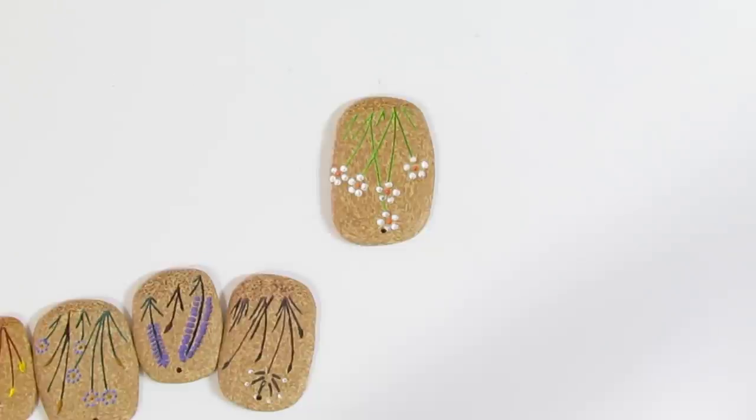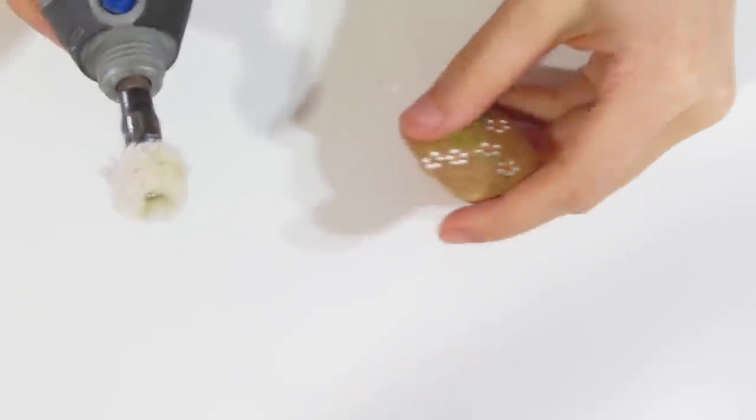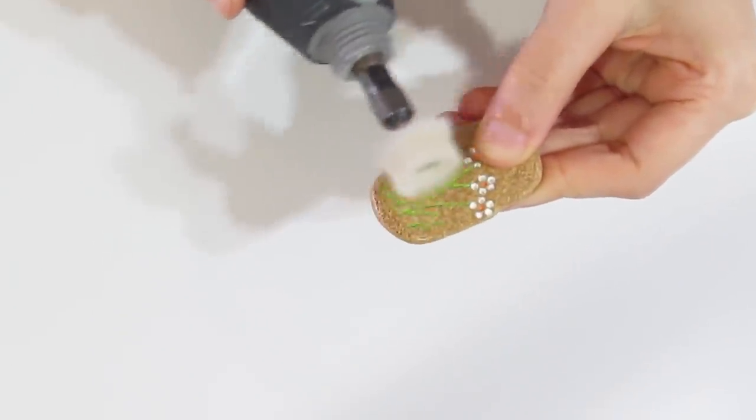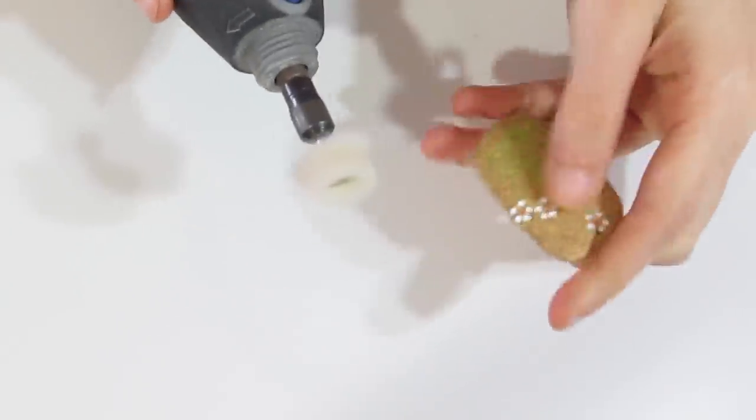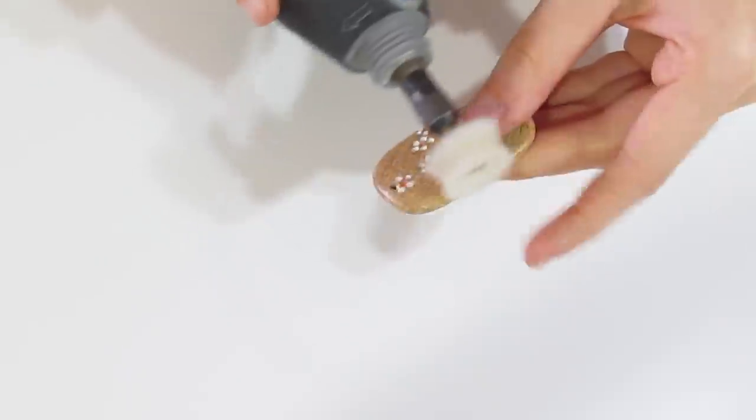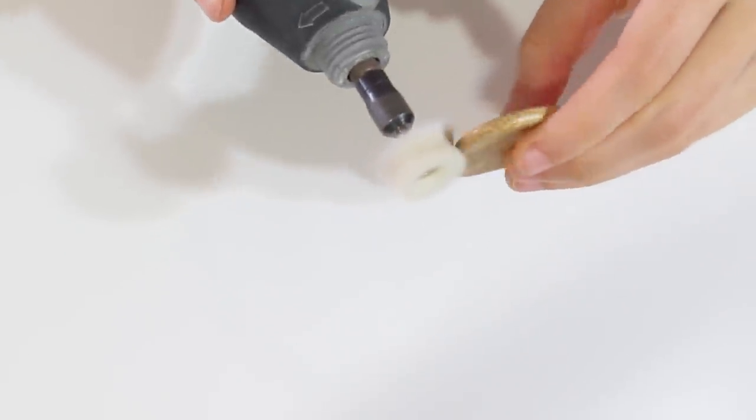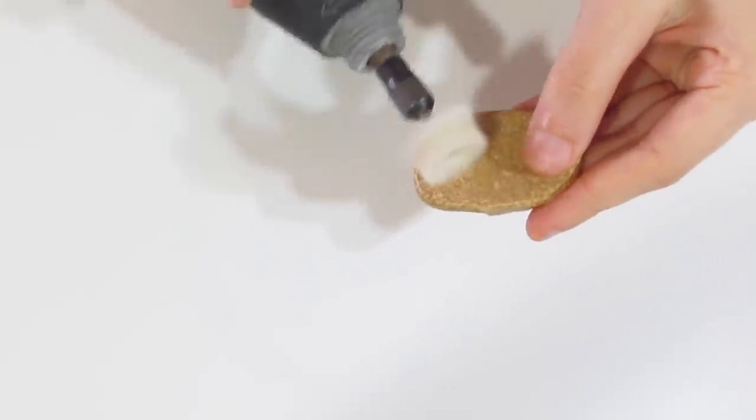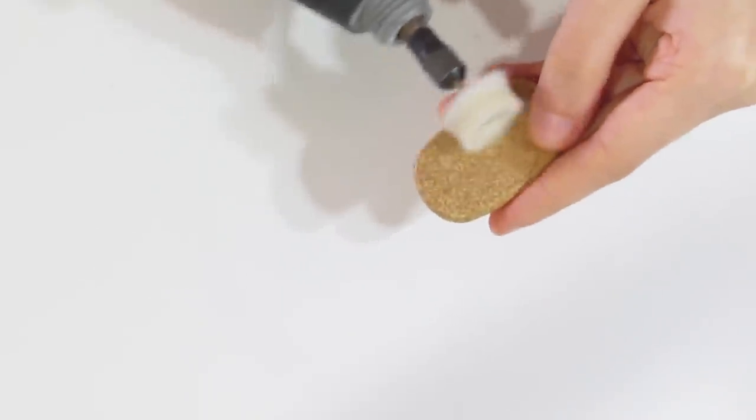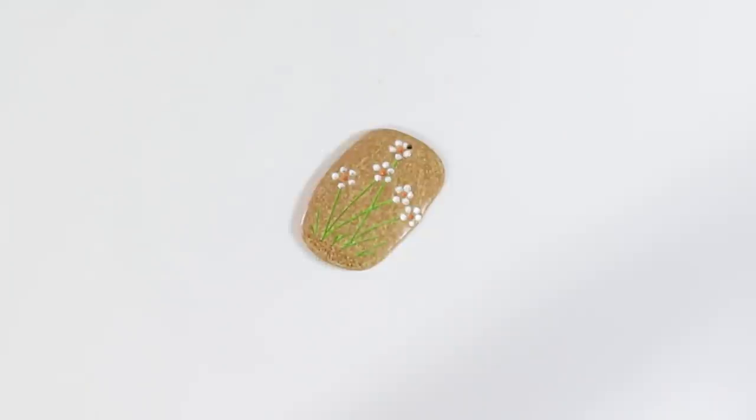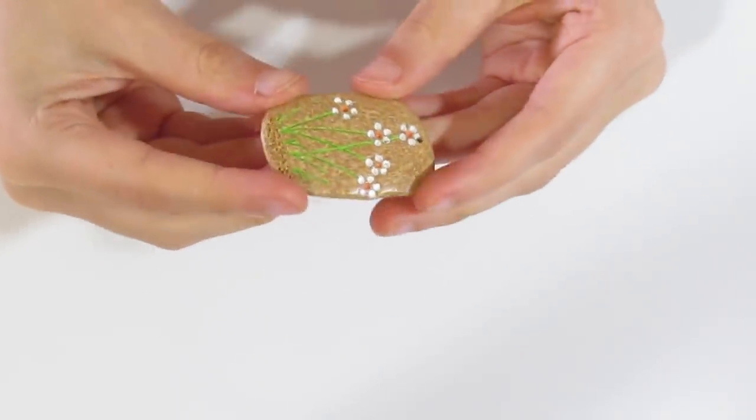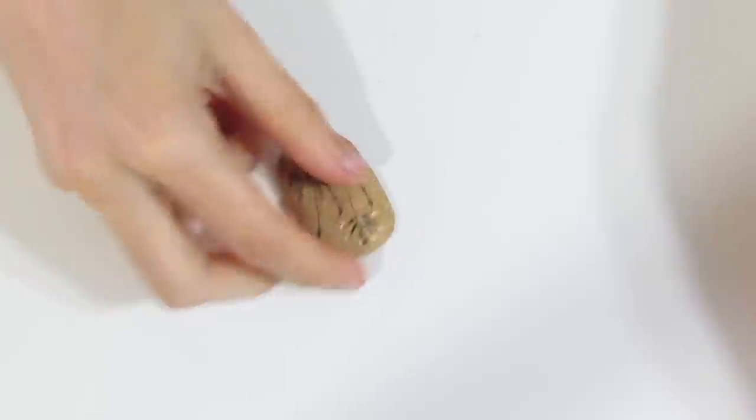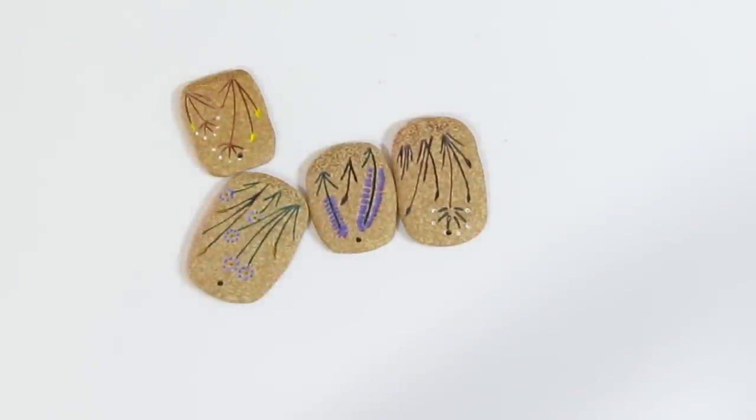And you can either buff that by hand or you can use a buffing wheel. There we go. That has now a nice light sheen. And I actually really like that. So I think I'm going to repeat that with these other pieces. I'm just going to give them a light coat of Renaissance Wax.